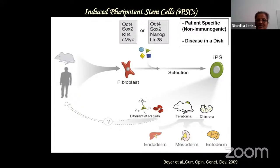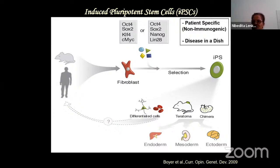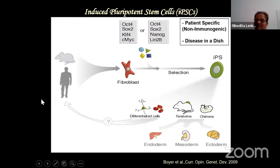Next are induced pluripotent stem cells (iPSCs). The concept behind inducing pluripotency in a somatic cell is bringing the cells back to the same embryonic counterpart state. In our body, we have the same genes everywhere, but different organs express different proteins - some genes are active, some inactive, regulated in a coordinated fashion. To bring the somatic cell back to a naive state, we need to express genes that are expressed very early during development - that is the concept behind induced pluripotency.